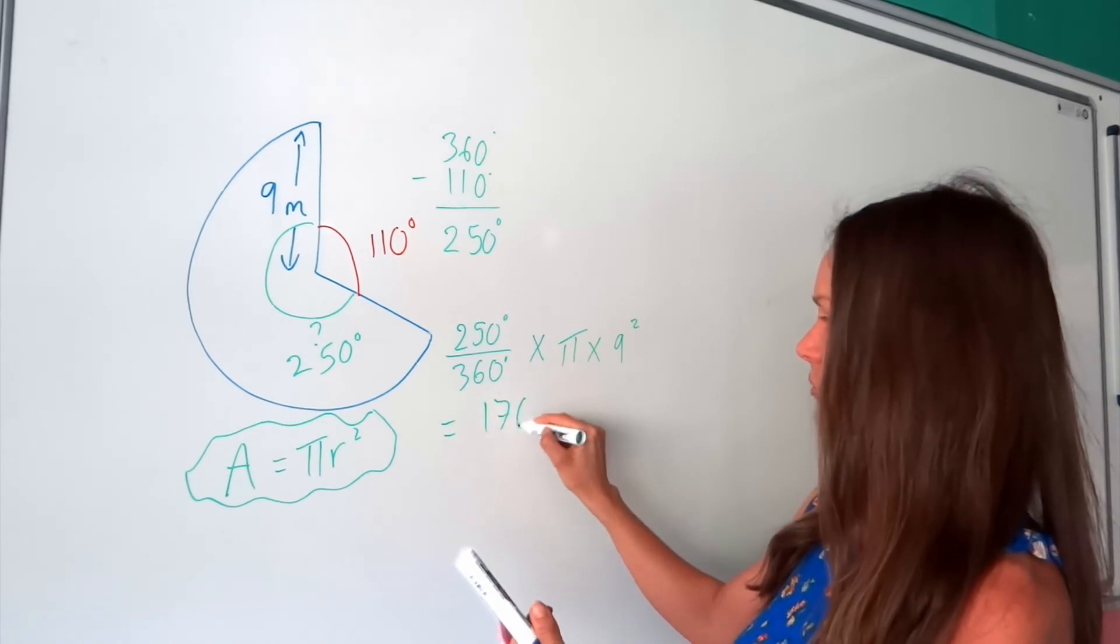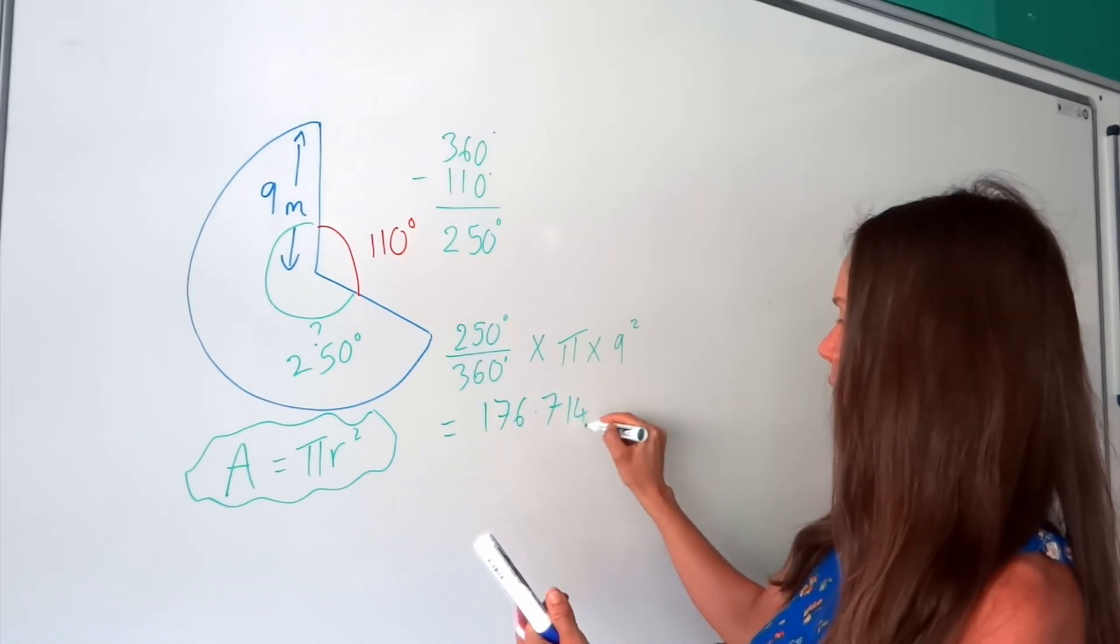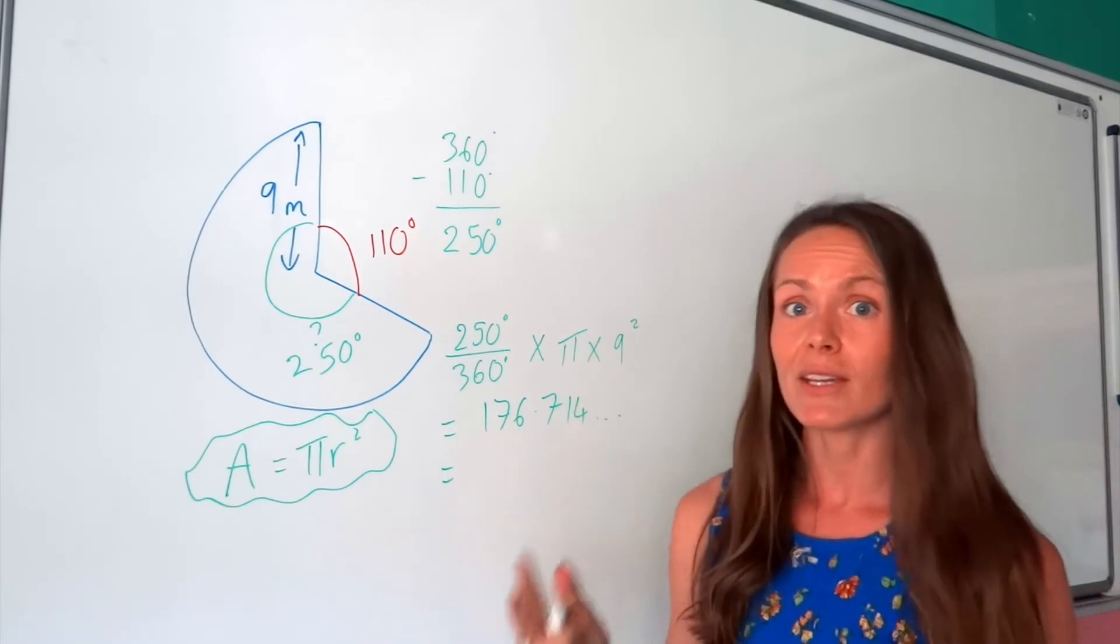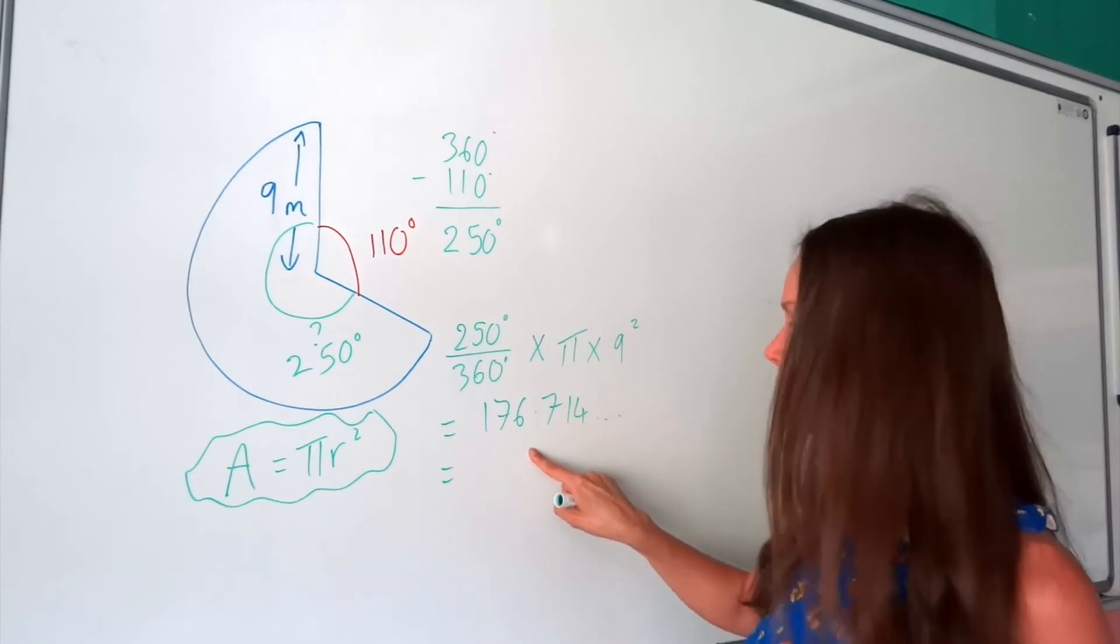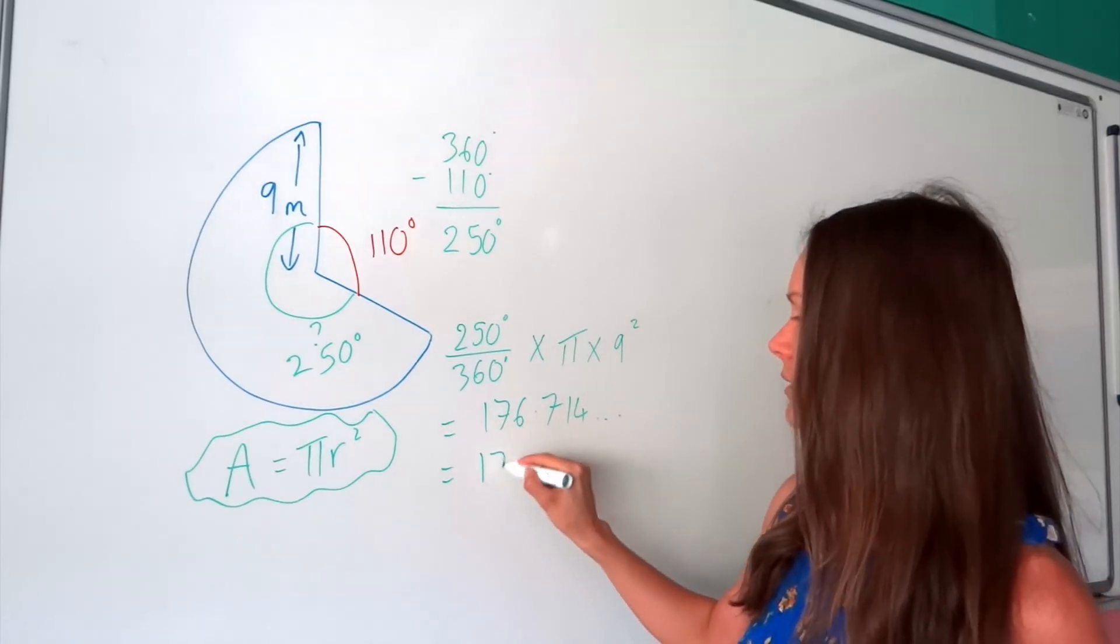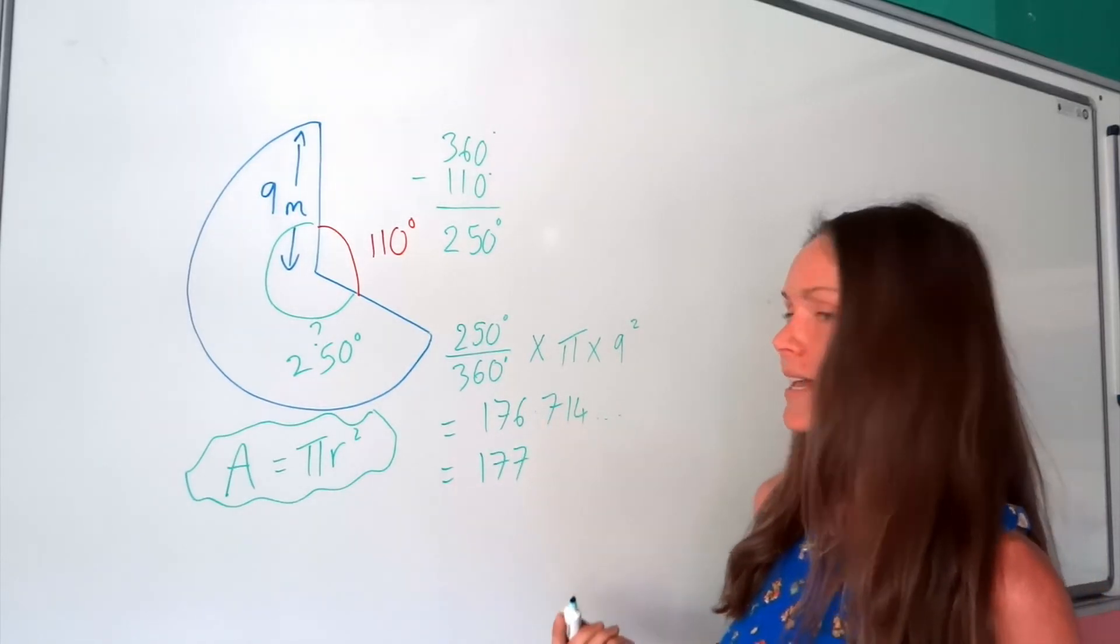So that gives me 176.714... I'm going to round to three significant figures again. So three digits, 1, 2, 3. But the fourth digit, 7, rounds that 6 up 1. So it's actually 177.